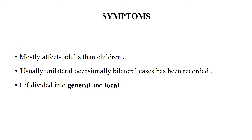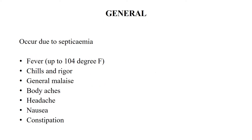It affects adults more than children. Usually it is unilateral but can be bilateral. Clinical features are classified into general and local. General symptoms mainly occur due to septicemia. There will be high grade fever up to 104 degrees Fahrenheit associated with rigors and chills, general malaise, body aches, headache, nausea, and constipation.